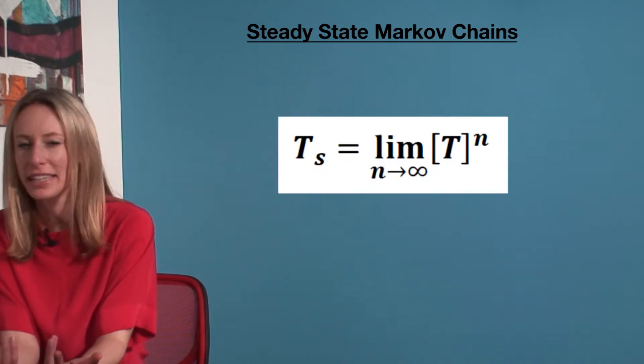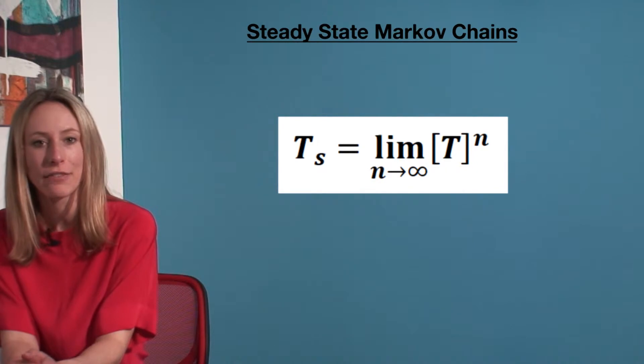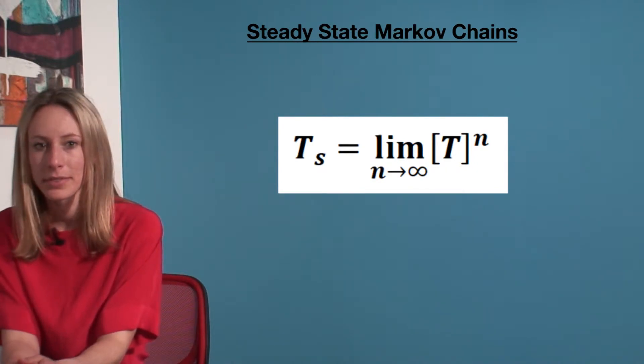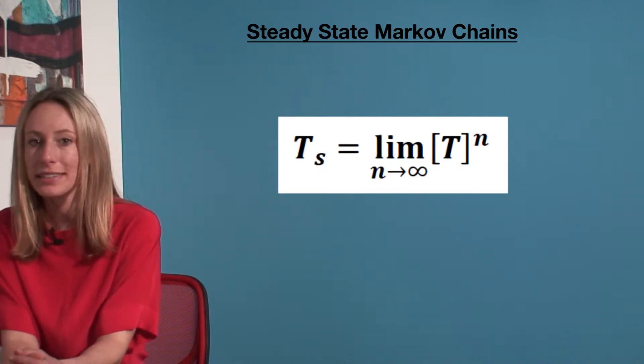Steady state Markov chains is the idea that as the time period heads towards infinity, a two-state Markov chain state vector will stabilize. The steady state probability matrix T_s equals the limit of T to the power of n as n approaches infinity.